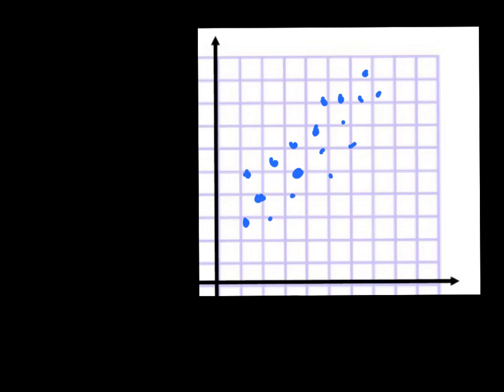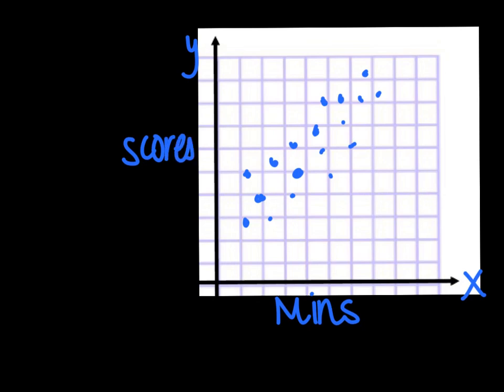The points are always scattered. So if I have my x-y axis, I'm working with two things — maybe minutes I study and scores on my math test. I'm working with two pieces of data and I'm graphing the points, and then I'm seeing if I see any kind of relationship. And this makes a scatter plot. In this video, we're going to learn about some different words that go with scatter plots and what the relationship means in scatter plots.